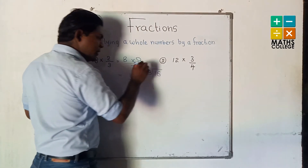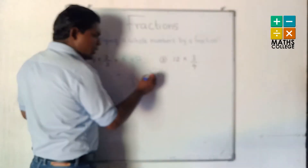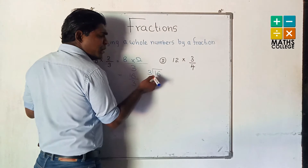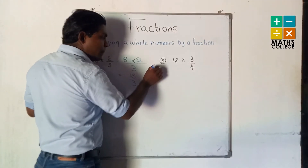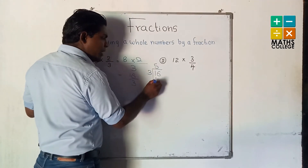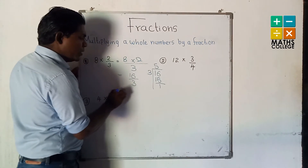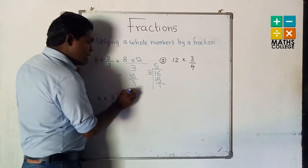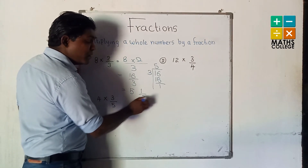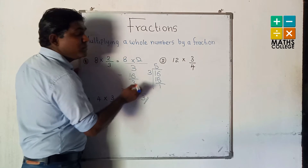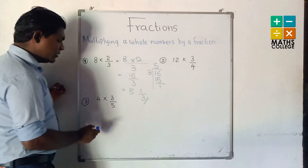Divide by 3: how many times does 3 go into 16? 5 times. 5 multiplied by 3 is 15. Remainder is 1. So the answer is 5 and 1 upon 3. Denominator is 3.